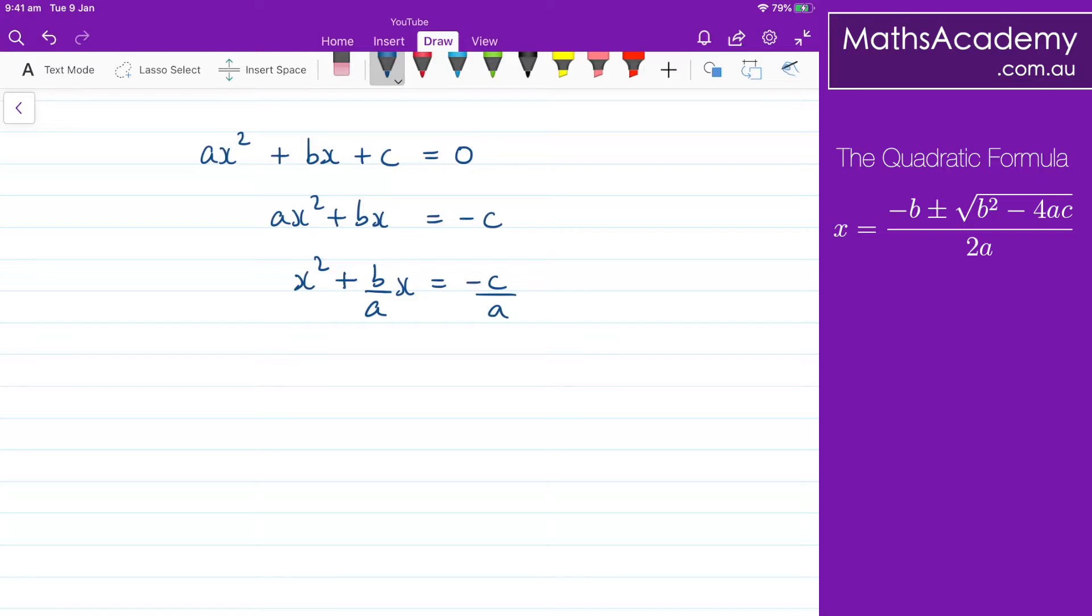Now when we're completing the square what we need to do is to add a number to the left hand side and add the same number to the right hand side. We like to keep that equation balanced. To find the number we add, we take the coefficient of the x term and divide by 2 and then square it. So what I'm going to get is x² + (b/a)x plus the coefficient of the x term divided by 2 and then squared. And I have to add that to both sides. So (b/2a)².